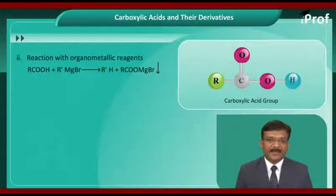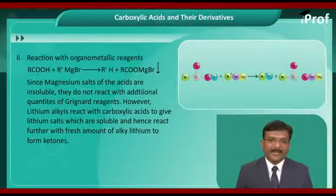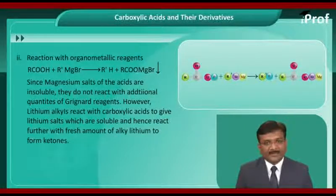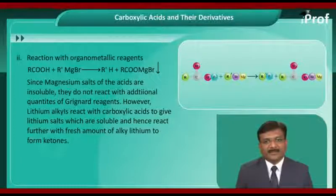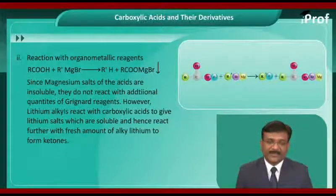Reaction with Grignard reagents. Grignard reagents are alkyl magnesium halides or alkyl lithium halides. Whenever carboxylic acids are treated with organometallic compounds, they give corresponding alkanes along with the formation of magnesium bromide salts, also called carboxylic magnesium bromide salts. Since magnesium salts of the acids are insoluble, they do not react with additional quantities of Grignard reagents.